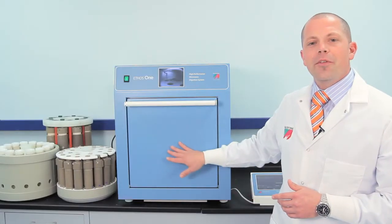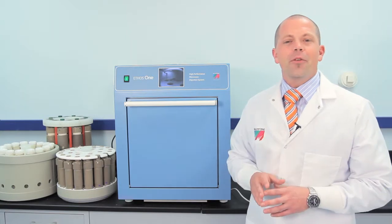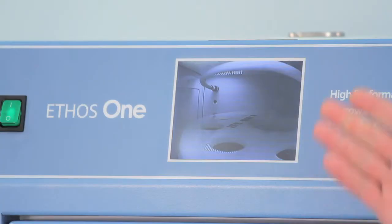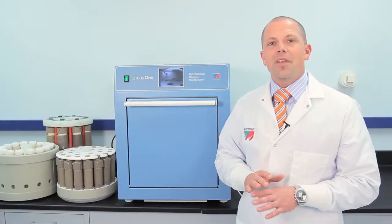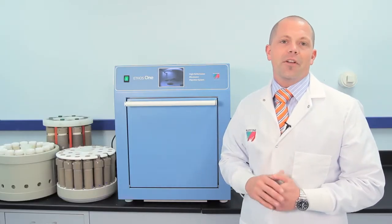Note, there is no viewing window in the door. That's because the Ethos One is fitted with a camera that allows the user to monitor the run in progress. Additionally, a video of the entire digestion run can be recorded and saved.